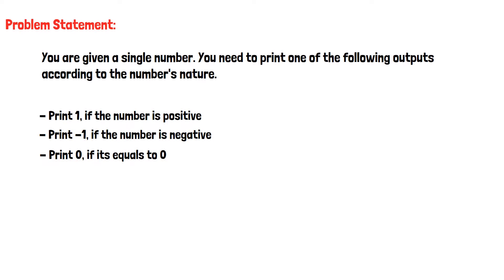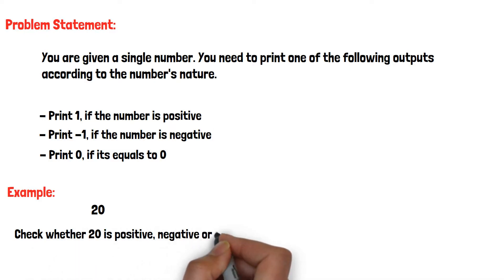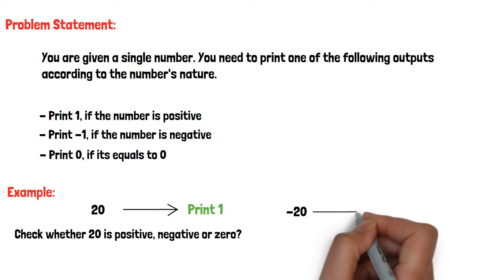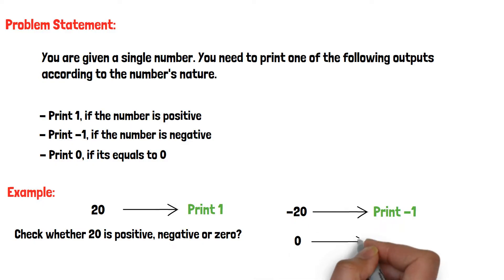Let's consider an example to understand the question properly. Let 20 be the single number. We have to check whether 20 is positive, negative, or 0. As 20 is positive, we will print 1. If the given number is minus 20, then we must print minus 1. And if the number is 0, then we must print 0.